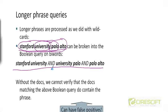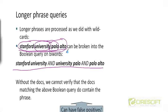Now, what's the problem with this? It's very likely that a document containing the phrase 'Stanford University' and the phrase 'University Palo' and the phrase 'Palo Alto' will probably contain the phrase 'Stanford University Palo Alto,' but it's not guaranteed. There could be examples of documents theoretically which contain all three phrases but not this particular four-term phrase. So there can be false positives.